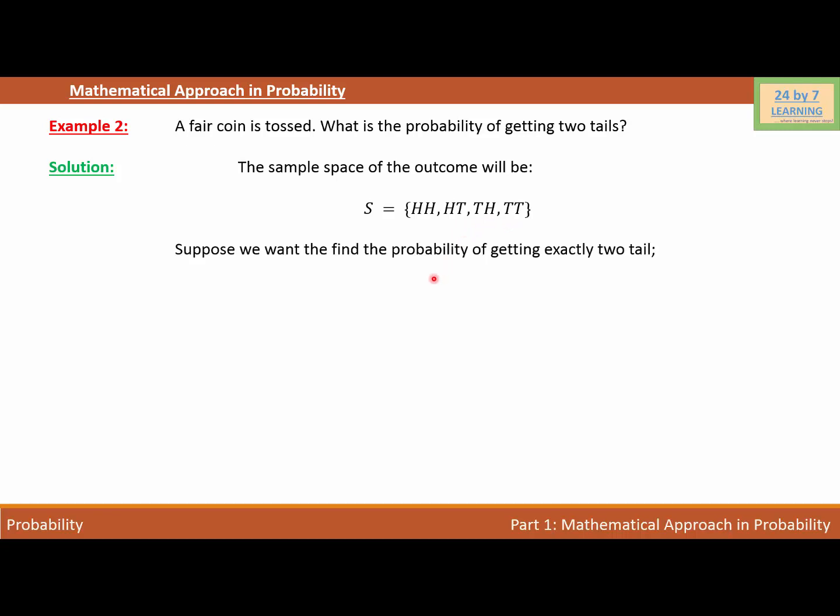We can say that the probability of getting exactly two tails is the event, which is E equals tail and tail.